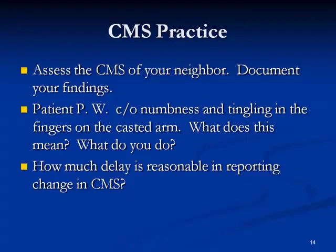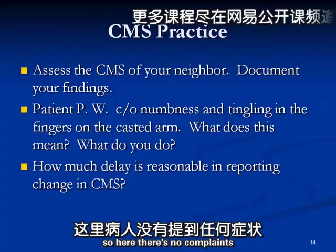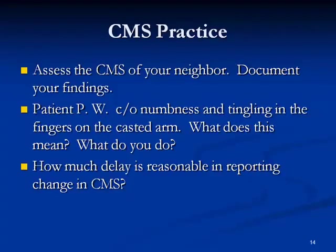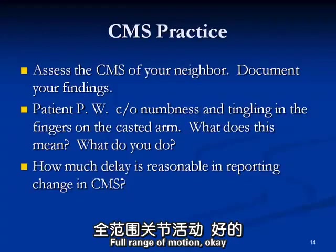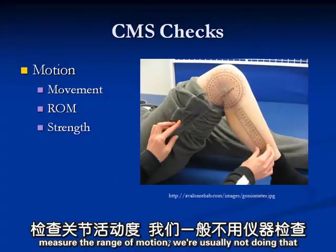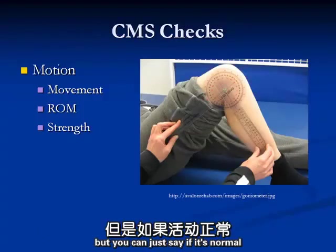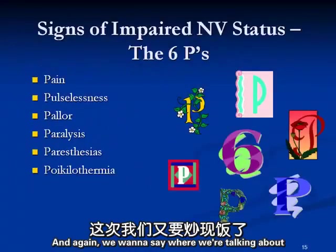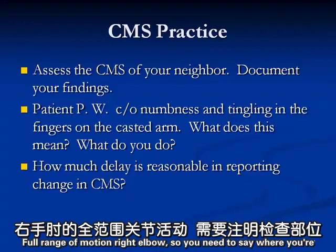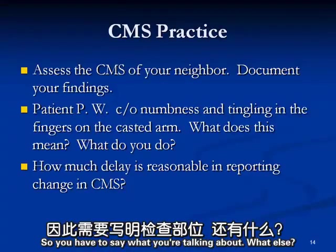CO means complains of - so here, no complaints. Range of motion: physical therapists have devices to measure ROM precisely; we're usually not doing that. You could say 'limited range of motion' or 'range of motion reduced by 50%' if abnormal. If it's normal, you can just say 'full range of motion.' And you need to say where - 'full range of motion, right elbow.' You have to specify what you're talking about because you didn't check every joint in the patient's body.